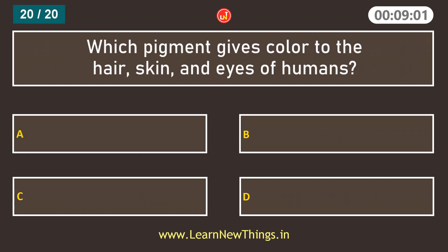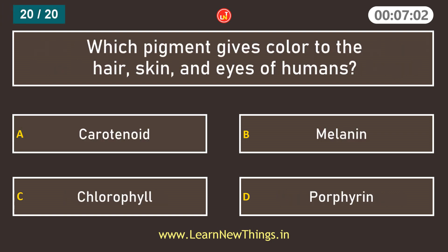Which pigment gives color to the hair, skin and eyes of humans? Melanin.